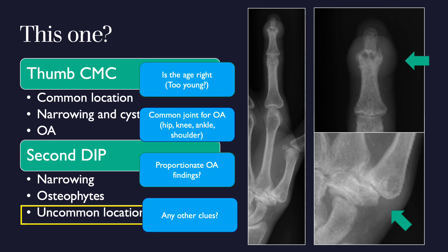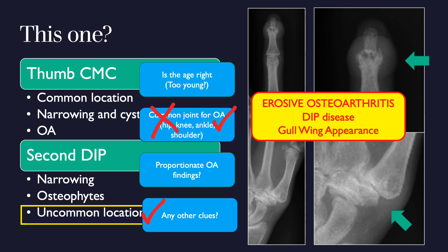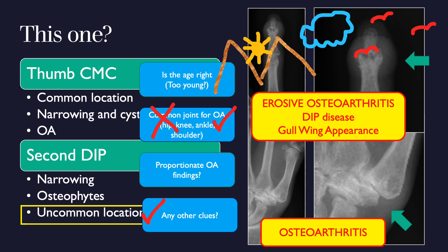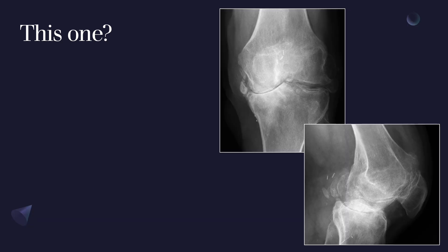Because of the DIP joint's uncommon location, our alerting signal is triggered. Applying our rules: it is not a common OA joint, which starts the alerting process. Looking more closely, this is a typical appearance for erosive osteoarthritis, identified by the gull-wing appearance of the erosions — named after the bird-wing shapes children draw in the sky. So this case shows erosive osteoarthritis at the DIP joint and regular osteoarthritis at the basal joint of the thumb.